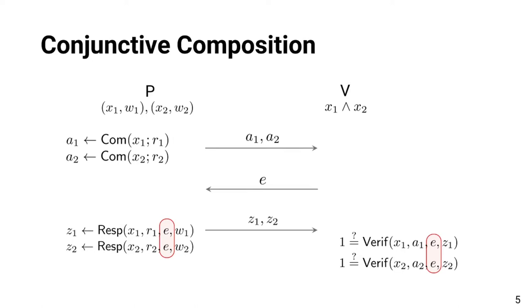One of the reasons that sigma protocols are widely used is that it is easy to obtain a sigma protocol for a compound statement by composing the sigma protocols for basic statements. For a conjunctive statement, parallel execution of sigma protocols for the basic statements with the common challenge constitute a sigma protocol for the compound statement.